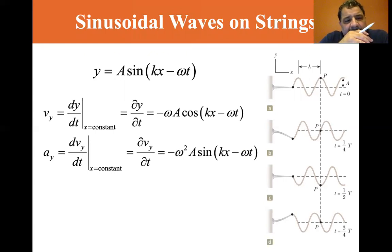So V of Y is equal to dy dt. In other words, the velocity is the derivative of position with X equals constant. So it's the partial derivative of Y with respect to T and that's equal to minus omega A cosine KX minus omega T. Remember we're keeping X constant. So it doesn't enter into the derivative.